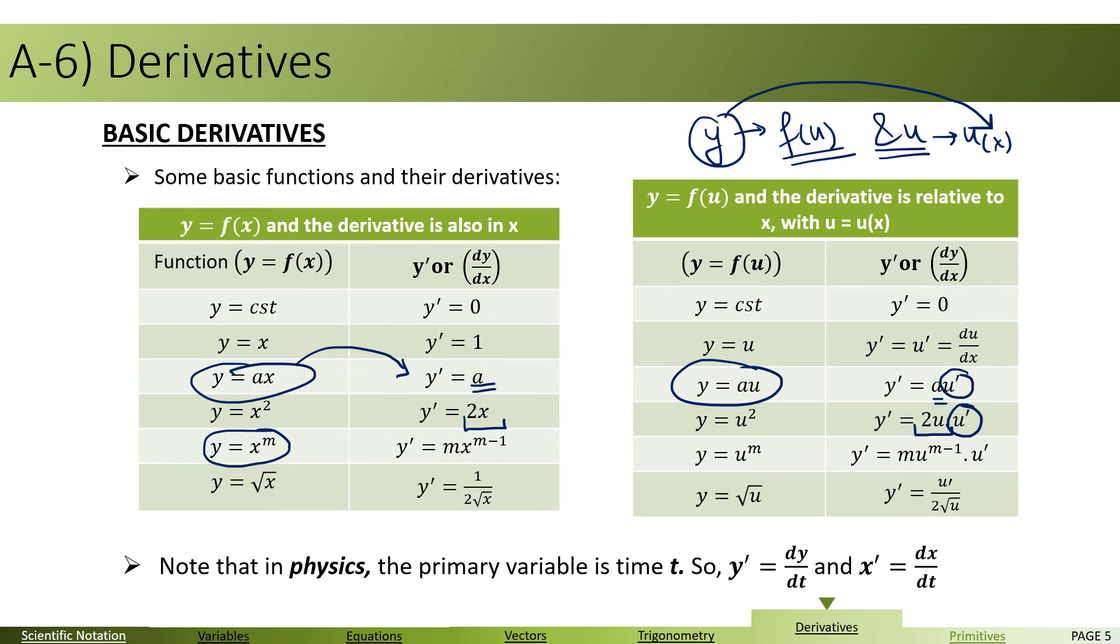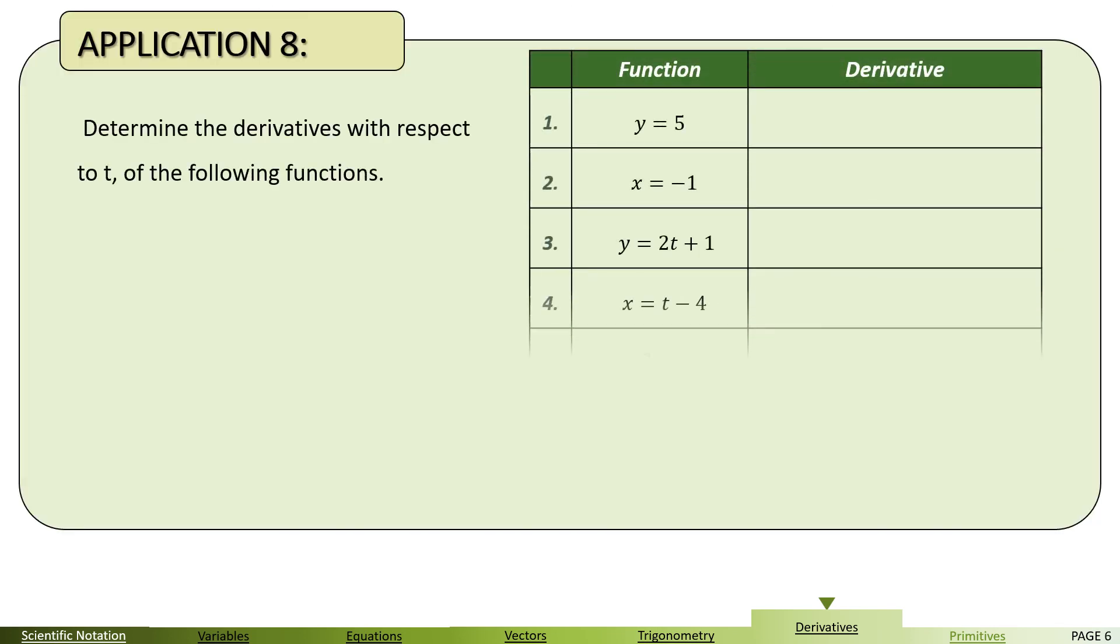When we calculate the general derivatives, for example, y equals u squared, y prime becomes 2u multiplied by u prime. U prime is the direct derivative of u relative to x. Note that when we go to physics, the primary variable is time t. We've talked about this when we discussed the Newtonian notation, but it's worth reminding you over here. So when you write y prime, it is simply dy by dt, not dx. And when we say x prime, it is dx by dt.